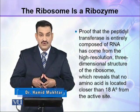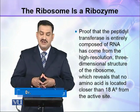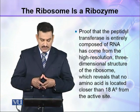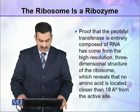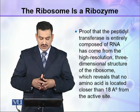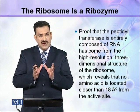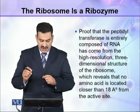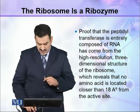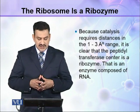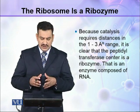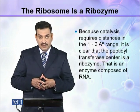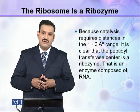Proof that the peptidyl transferase is entirely composed of RNA has come from the high resolution three-dimensional structure of the ribosome, which reveals that no amino acid is situated closer than 18 angstroms from the active site. Because catalysis requires distances in the range of 1 to 3 angstroms, it is clear that the peptidyl transferase center is a ribozyme — that is, an enzyme composed of RNA.